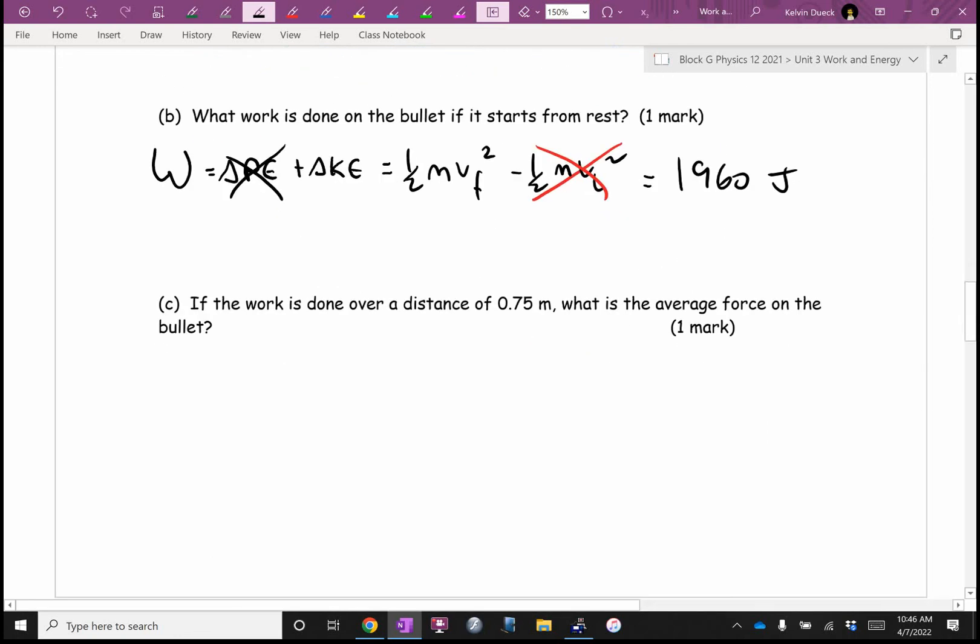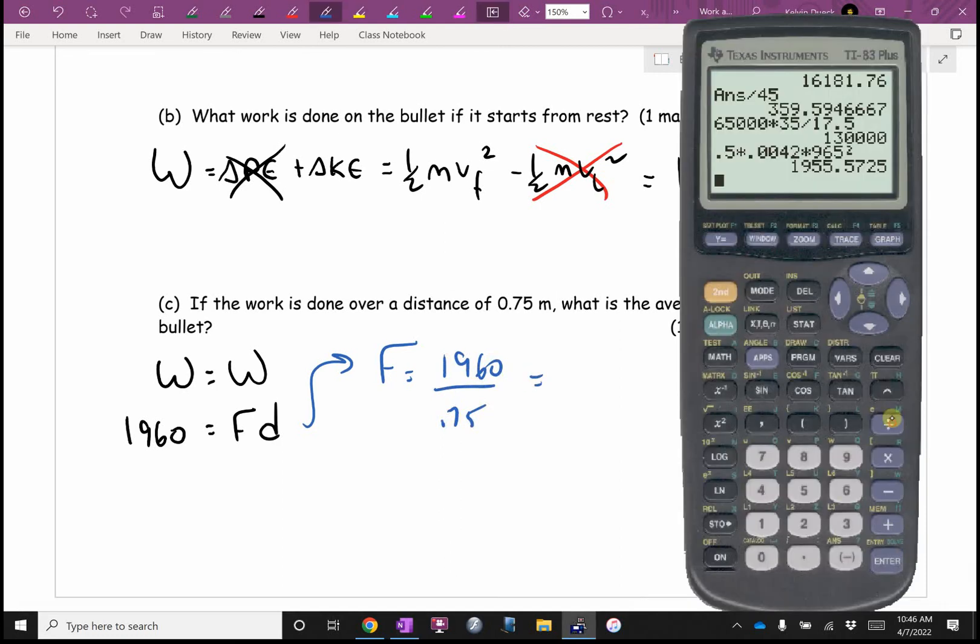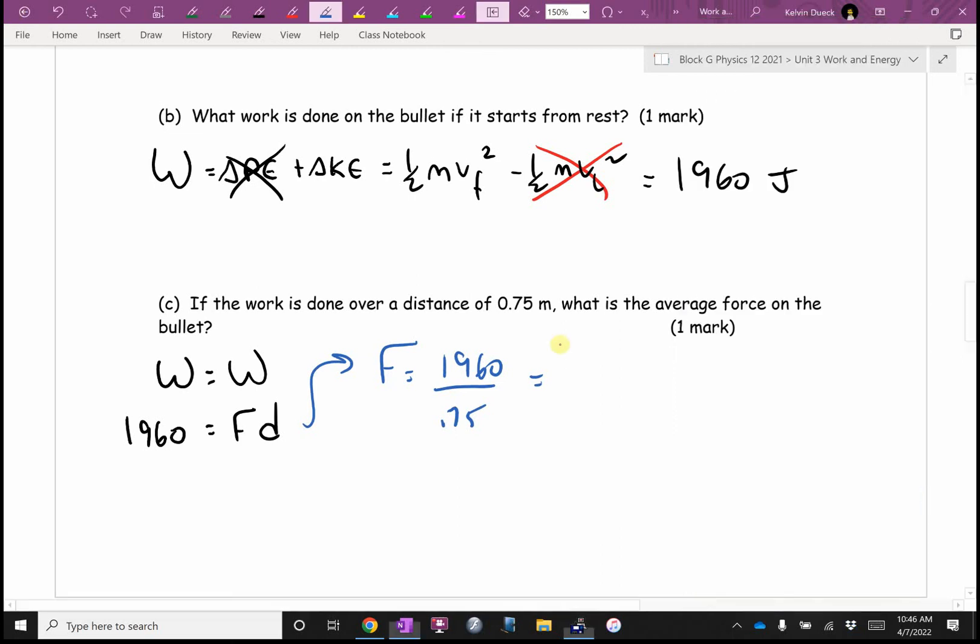If the work is done over a distance of 0.75 meters, what's the average force on the bullet? Well, I think I'm going to start out saying work equals work, which is a little obvious. But what I really mean by that is 1960 equals force times distance. Force is going to be 1960 divided by the distance 0.75. Using my answer button, I get 2,610 newtons. So this is the beauty of the work energy theorem. It allows you to relate force, distance, work energy. It's really quite flexible.